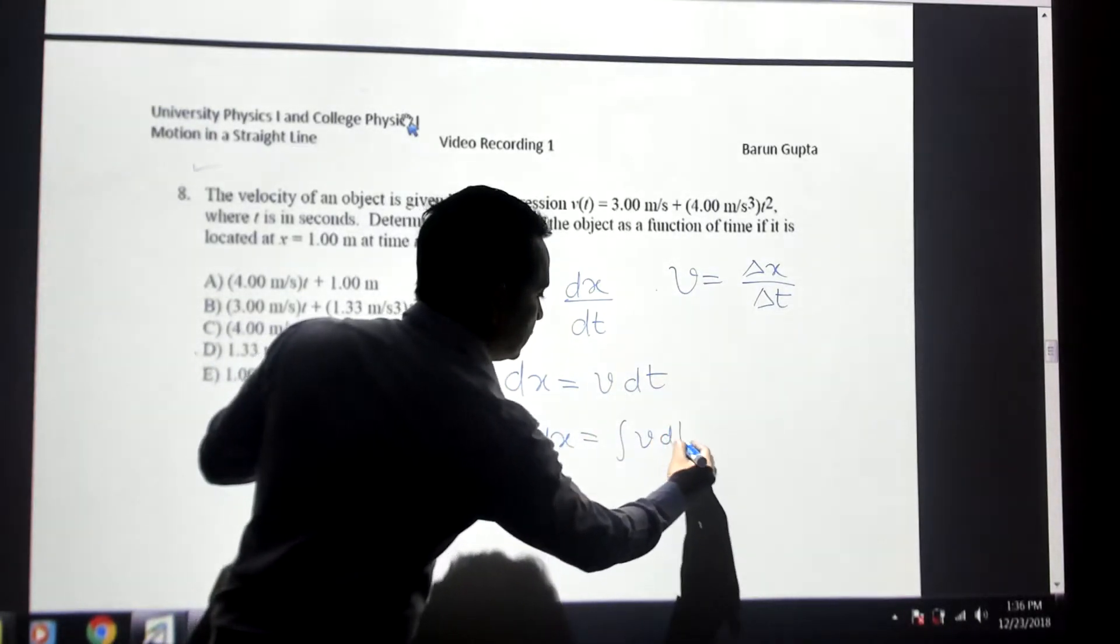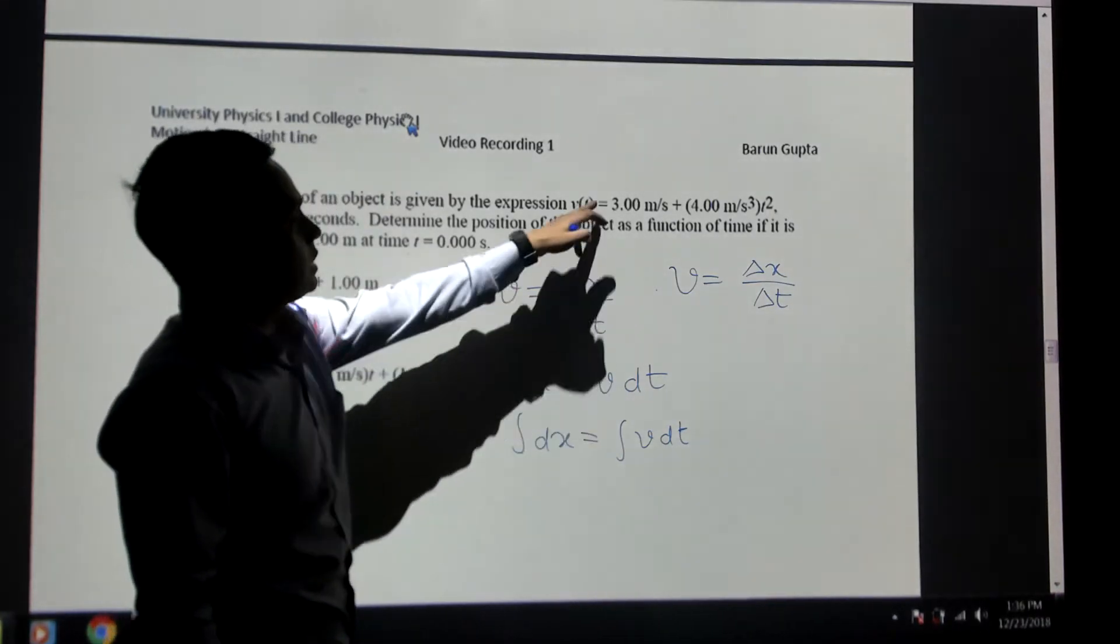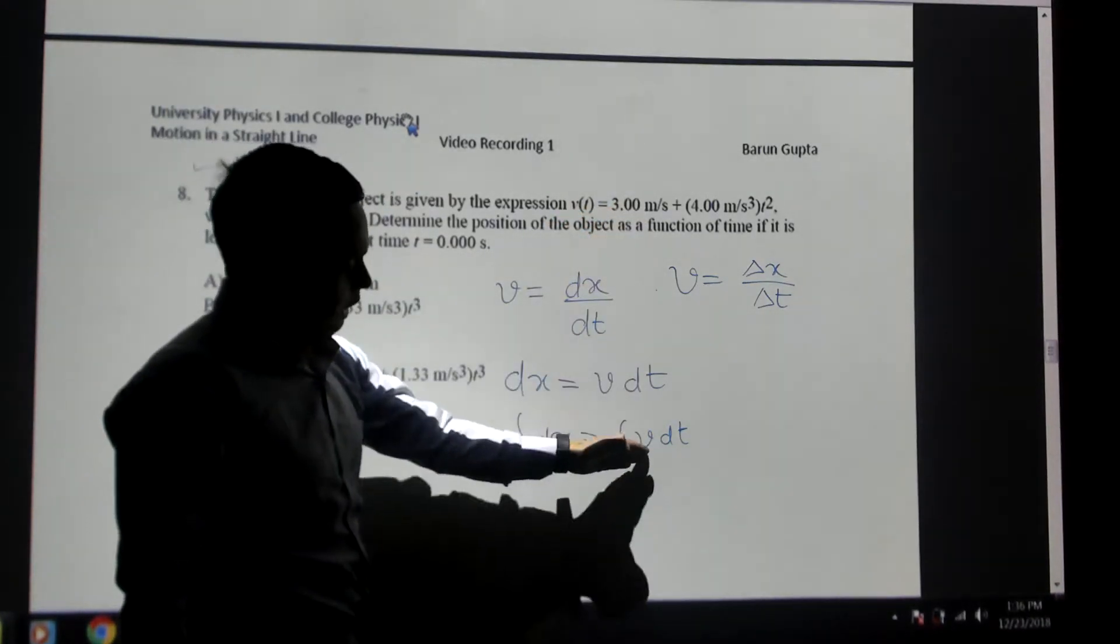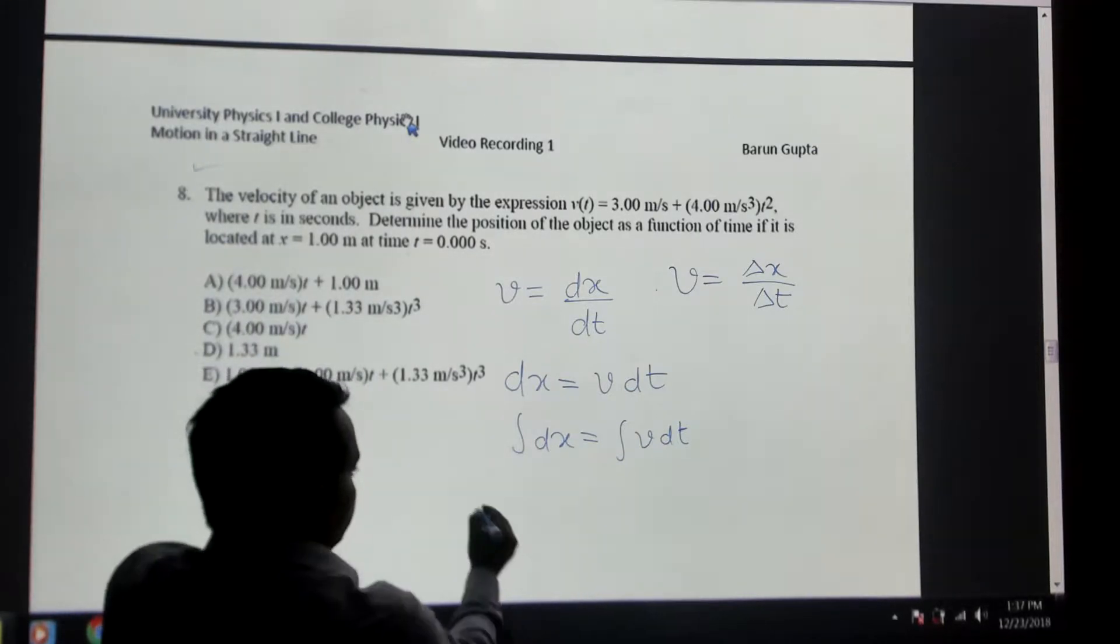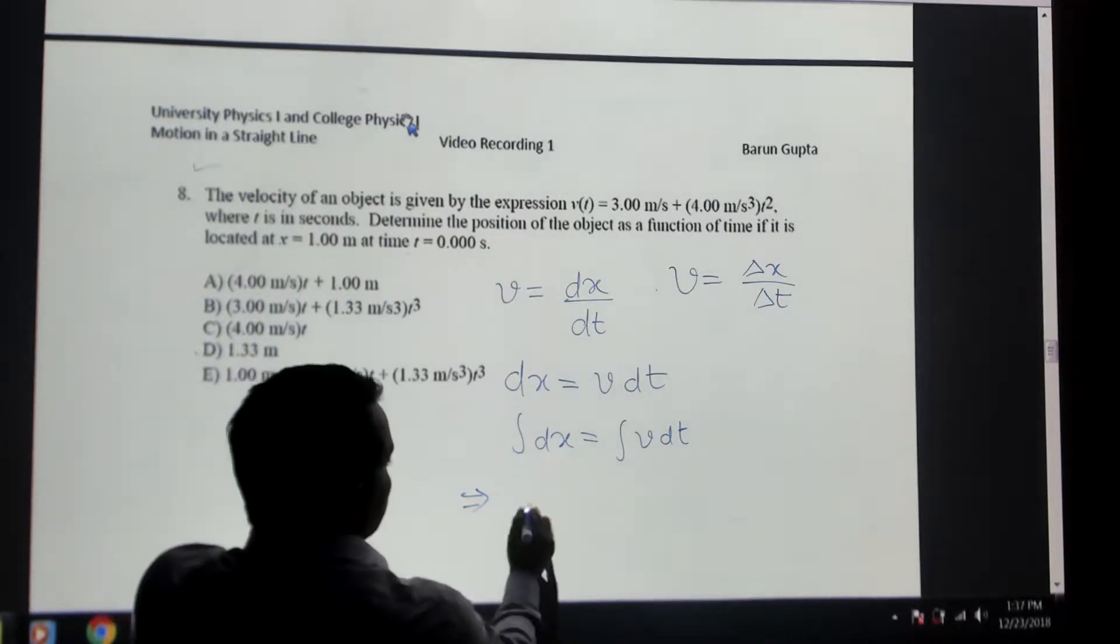Integrate v times dt. Remember the v is not a constant here because this is position dependent, so you cannot take this one out. Let's just do a simple math then.